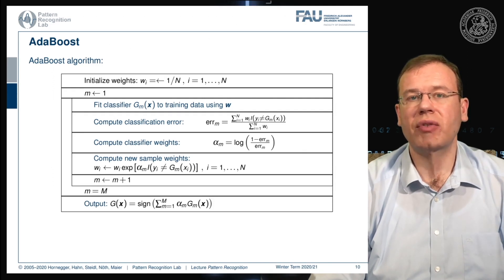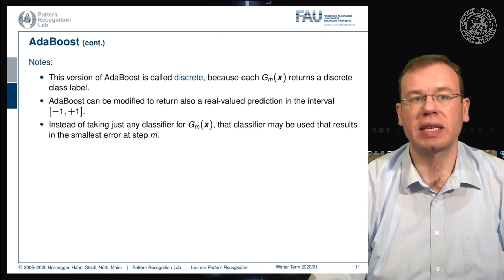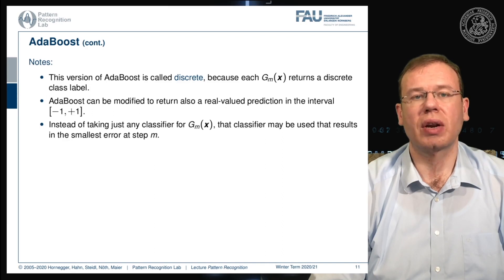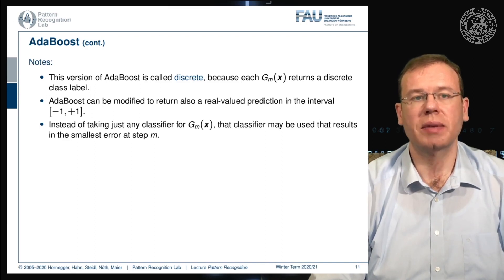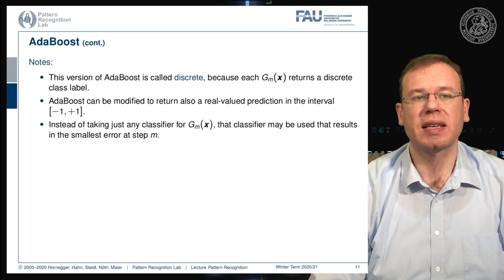In every iteration of AdaBoost, we have to train a new classifier. This version of AdaBoost is called the discrete version because each classifier returns a discrete class label. AdaBoost can also be modified to return a real-valued projection in the interval from minus one to one. Instead of taking any classifier for g_m, the classifier that results in the smallest error at step m may be used.